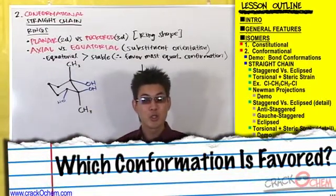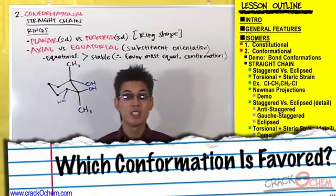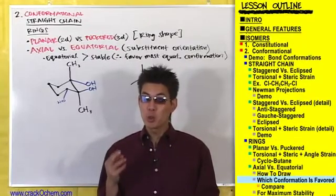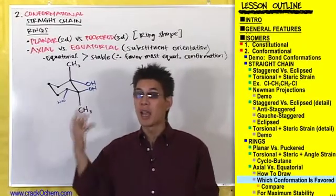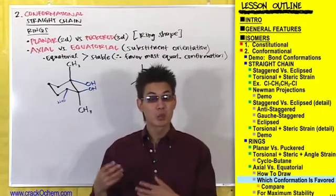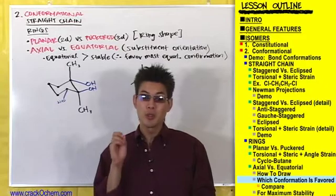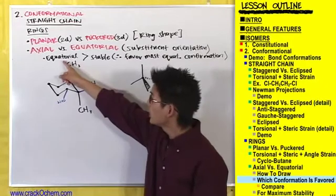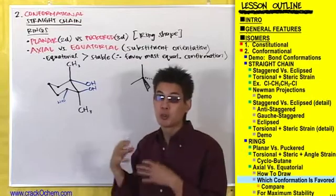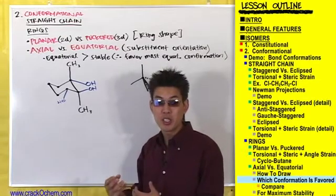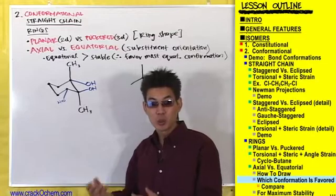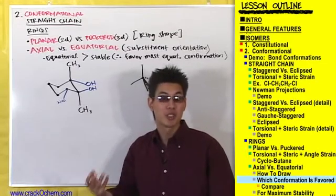Now you know how to draw axial and equatorial substituents. The question is, how do you know whether to draw a substituent axial or equatorial on the ring? Which conformation does the ring favor? Equatorial substituents are more stable than axial substituents, so a ring will want its substituents to be equatorial. This general rule will help you out on simple cyclohexanes.